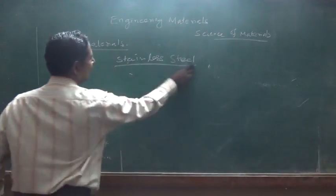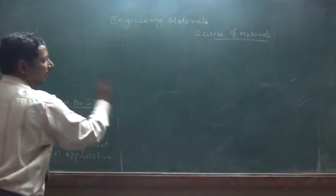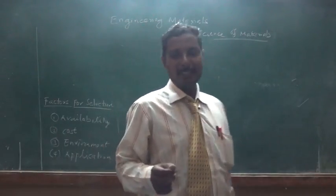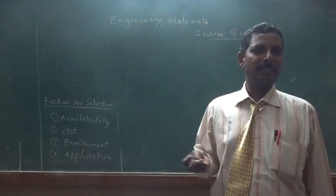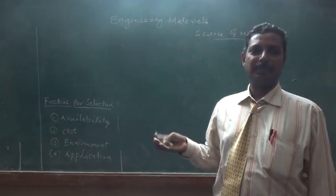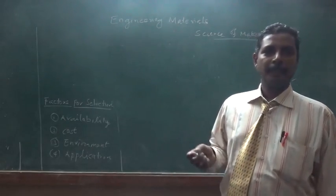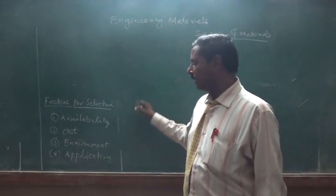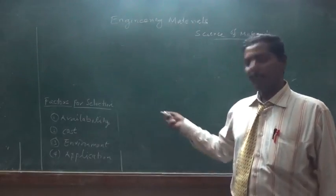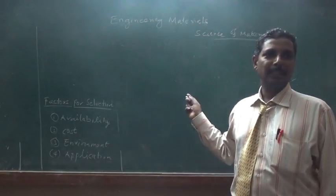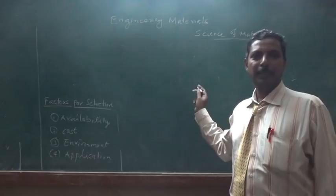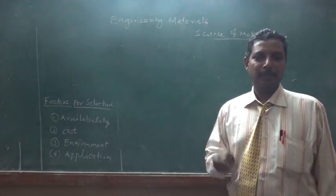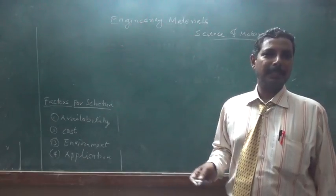Stainless steel is used for the production of pipes, metals, and a lot of silver-colored metal applications. The cost is very low in the production of steel, so they are producing this type of steel and stainless steel for major applications.